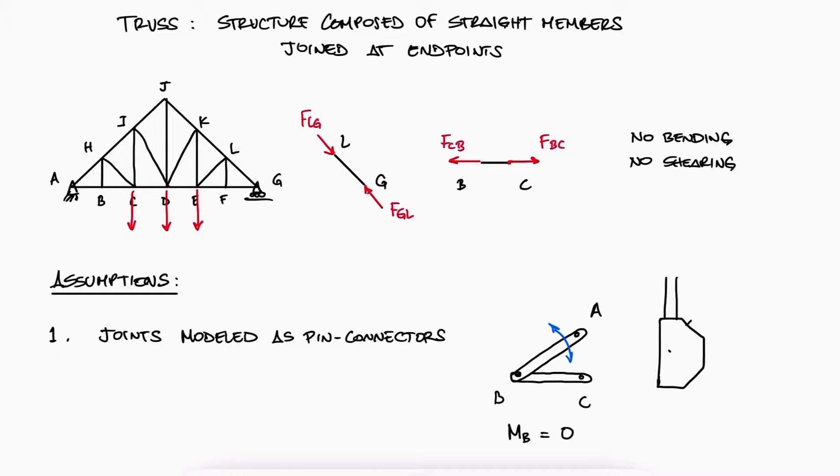In the real world, you'll often see these members connected by gusset plates, the component used in a previous example video. When the lines of all members intersect at the same point, assuming it behaves like a pin connection is reasonable.